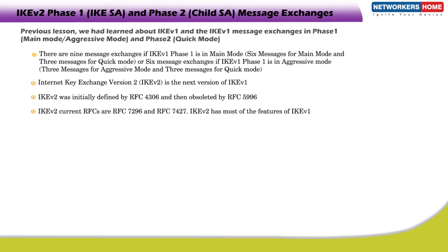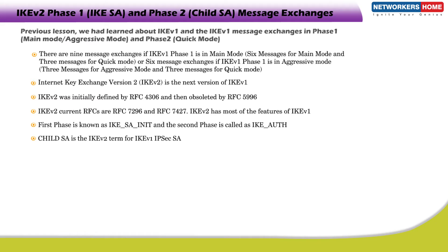Like IKE V1, IKE V2 also has a two-phase negotiation process. The first phase is known as the IKE SA exchange and the second phase is called the Child SA exchange. At the end of the second exchange, i.e. Phase 2, the first Child SA is created. Child SA is the IKE V2 term for IKE V1 IPsec SA. At a later instance, it is possible to create additional Child SAs using a new tunnel.